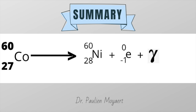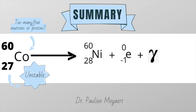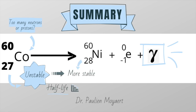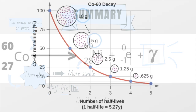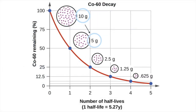Here's a quick summary. If there are too many or too few neutrons for a given number of protons, the resulting nucleus will be unstable and will undergo radioactive decay. This decay occurs at a constant, predictable rate that is referred to as half-life. The half-life is the amount of time it takes for a given radioisotope to lose half of its radioactivity.